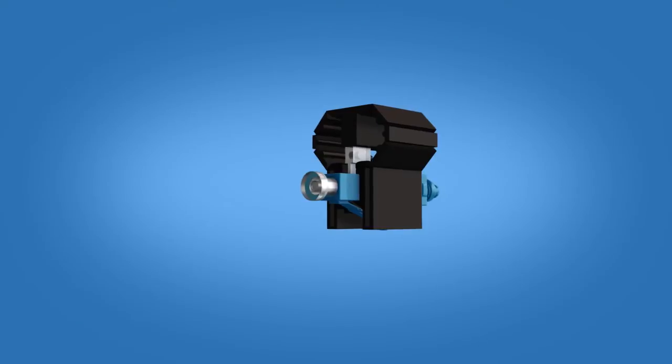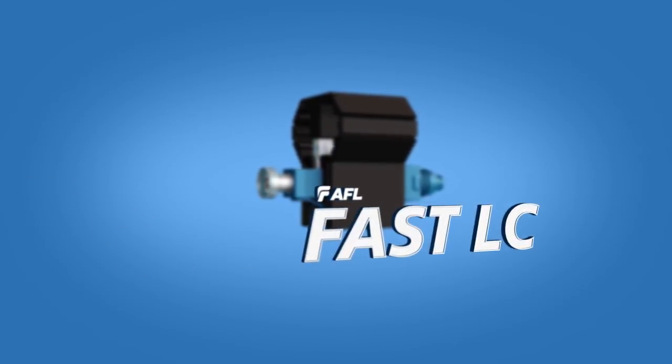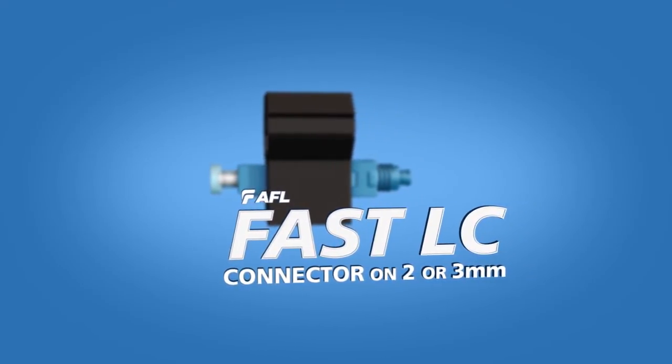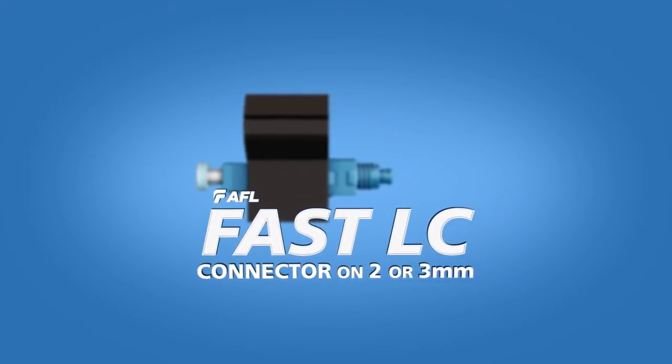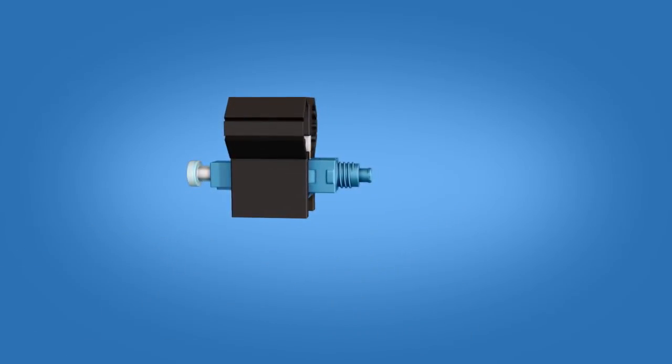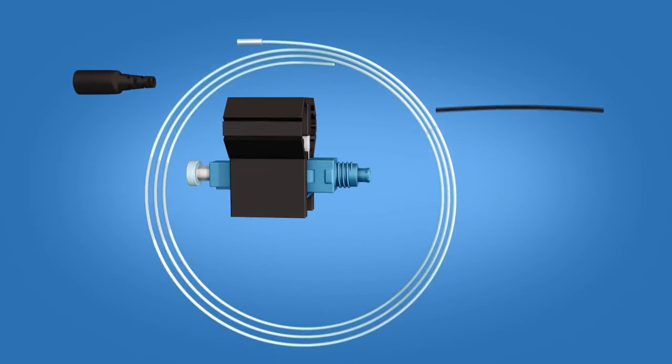This video demonstrates step-by-step termination instructions for the AFL Fast LC Connector on 2 or 3 mm fiber cable. The Fast LC Connector Kit contains the following items: a 900 micron boot, clear protective tubing, 250 micron tubing, and a Fast LC Connector.